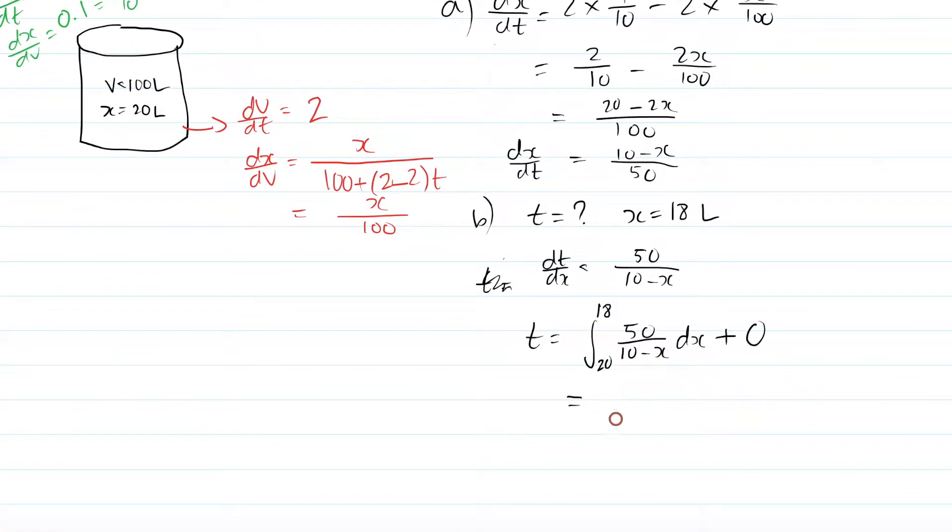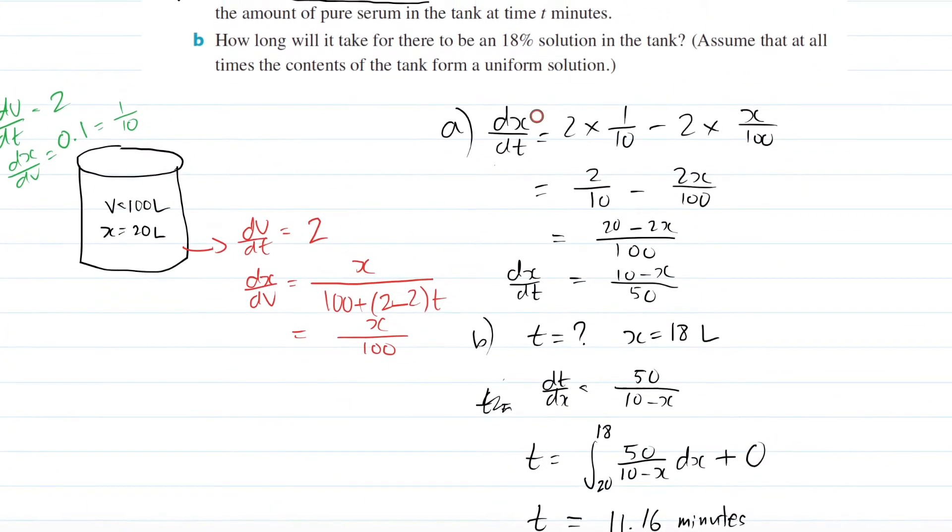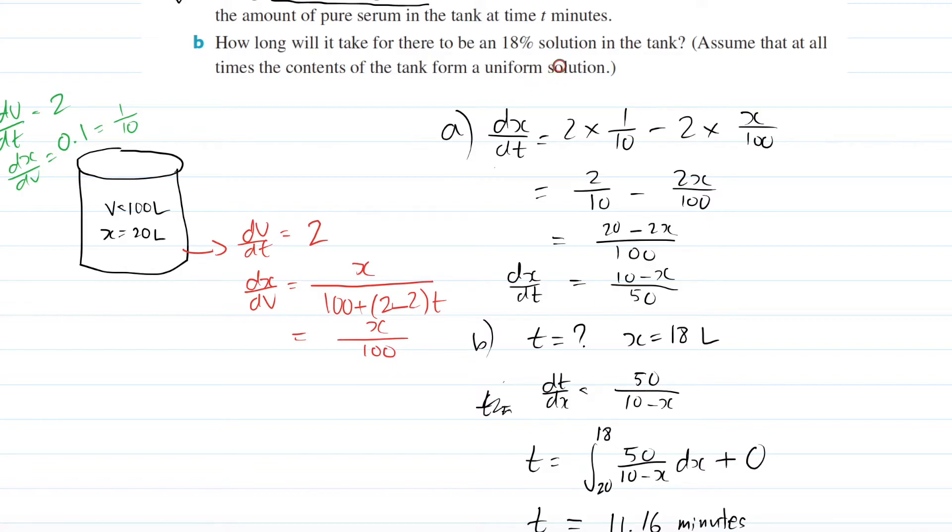You should end up with 11 points. Let me just do my calculator quickly. Yep, 11.16 minutes, because it's in terms of minutes. And that's your answer, guys, for part B. So at 11.16 minutes, there will be 18% or 18 liters of pure serum in your tank.